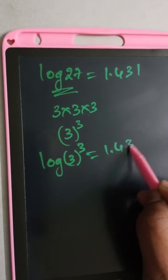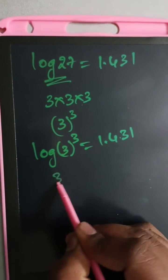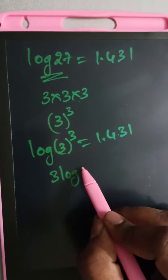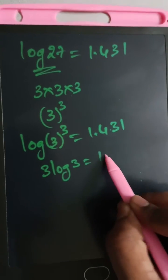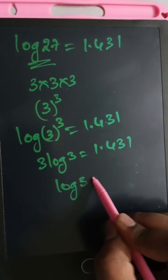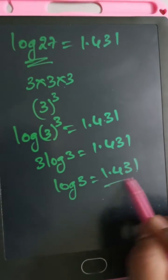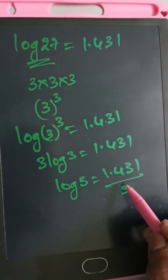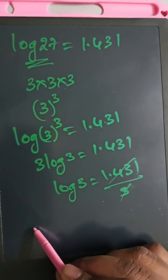So 3 log 3 is equal to 1.431. Therefore, log 3 equals 1.431 divided by 3.